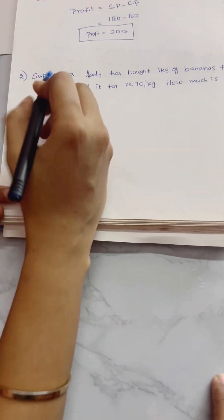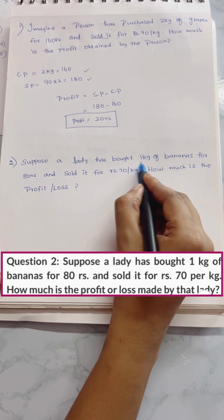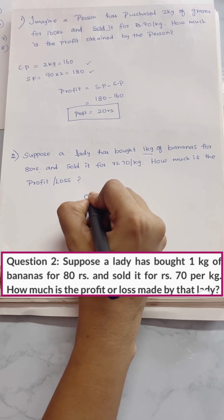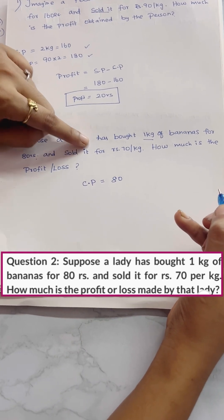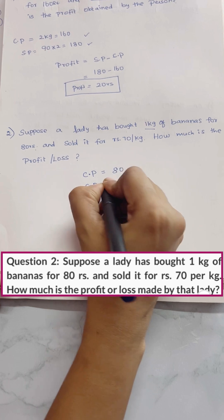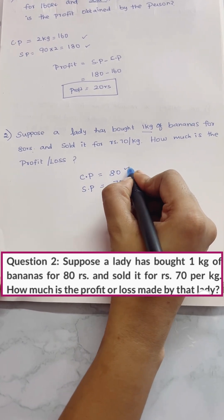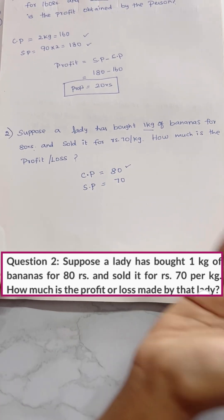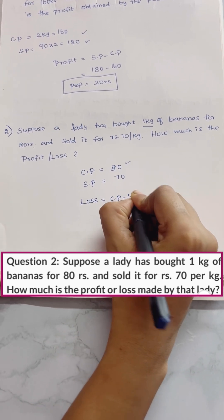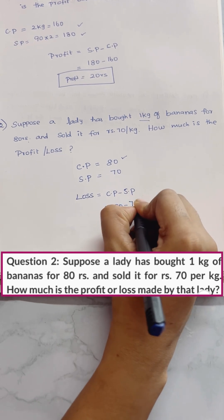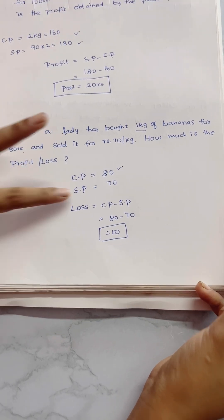The second sum: a lady has bought 1 kg of bananas for 80 rupees — that is the cost price. She sold them for 70 rupees. The cost price is greater than the selling price, so we have a loss. Loss equals cost price minus selling price: 80 minus 70 equals Rs. 10 loss.